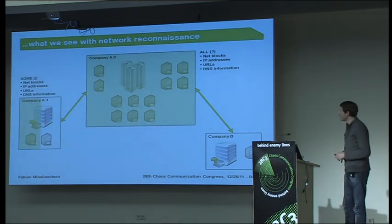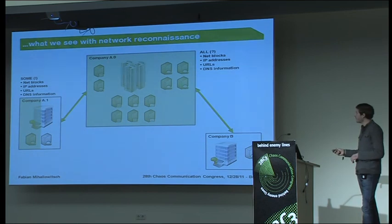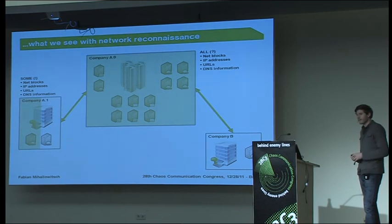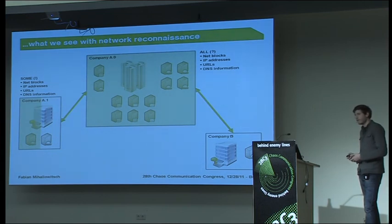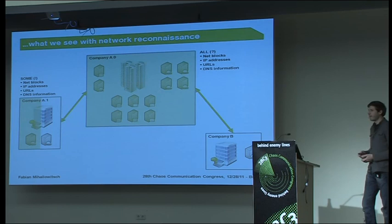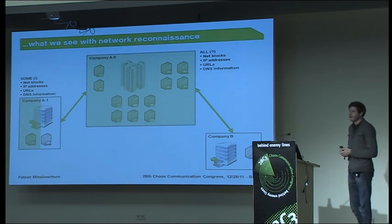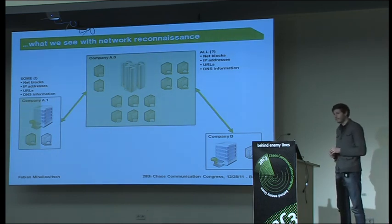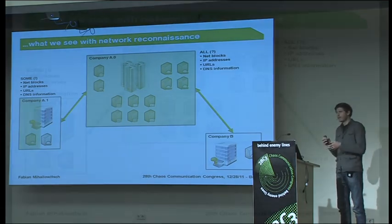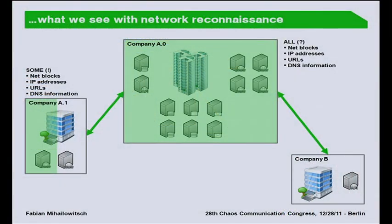In reality, what we see with network reconnaissance is that we concentrate on that one target — we look up net blocks, IP addresses, URLs. If we know company A, we can hopefully get all that information, and for connected companies we might identify most information as well. But as long as you don't know which service providers and other companies are connected to the whole context, you probably won't see that whole part.